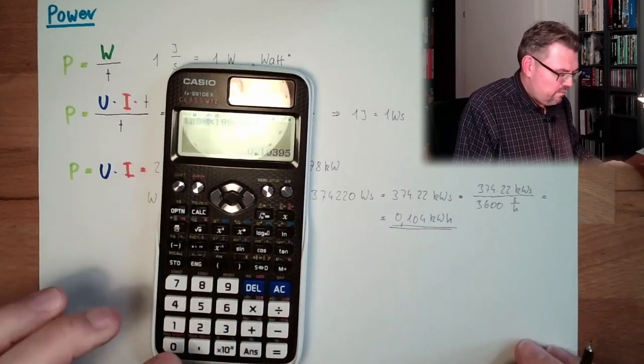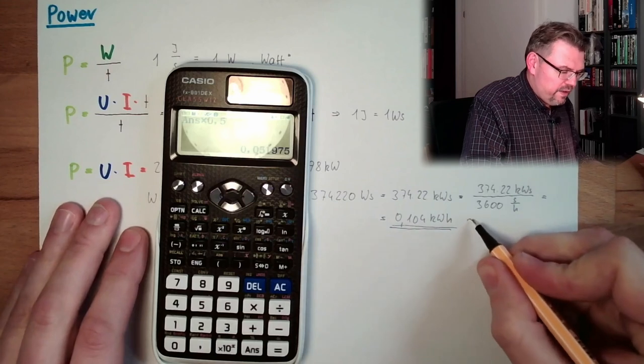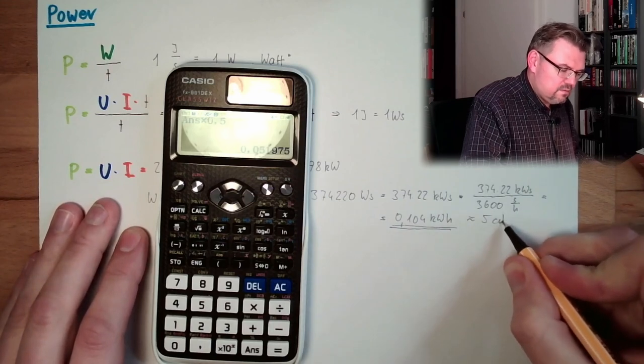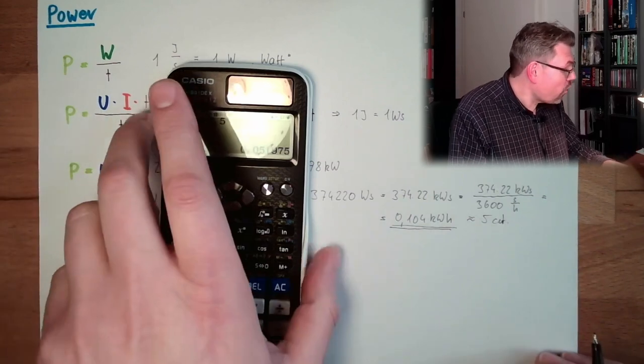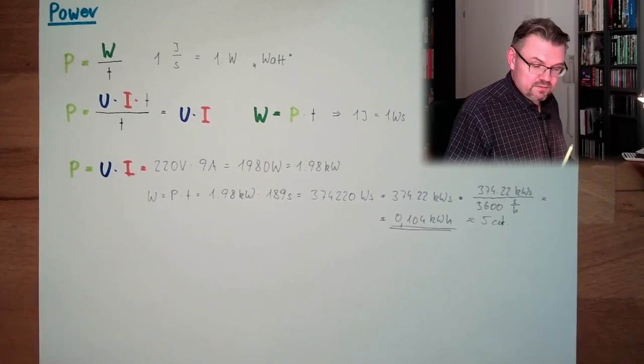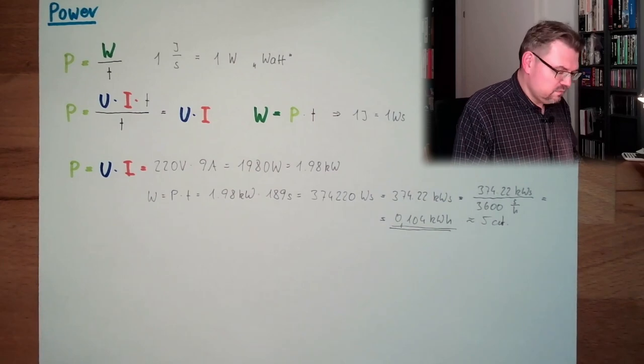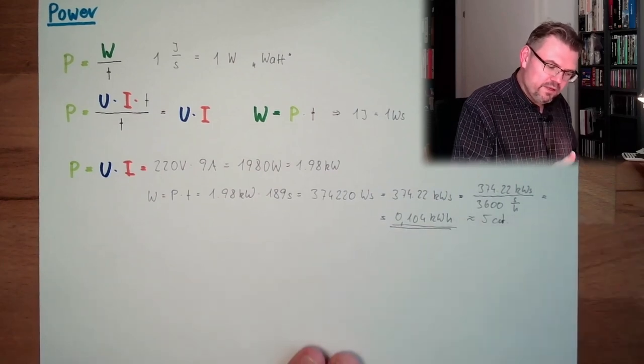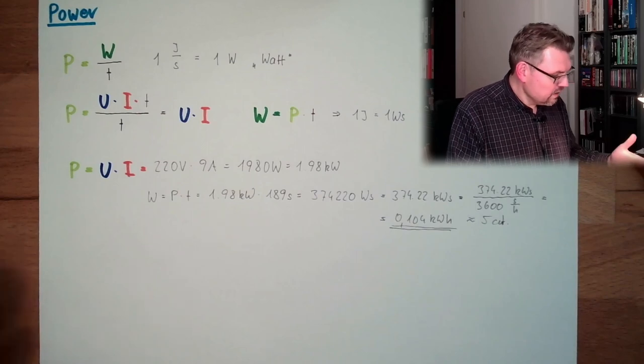That's what this heating of the tea did work. And now, with 50 cents per kilowatt hour, this costs roughly 5 cents. Because current electric power is really expensive. So, boiling 1 liter of tea, 5 cents.